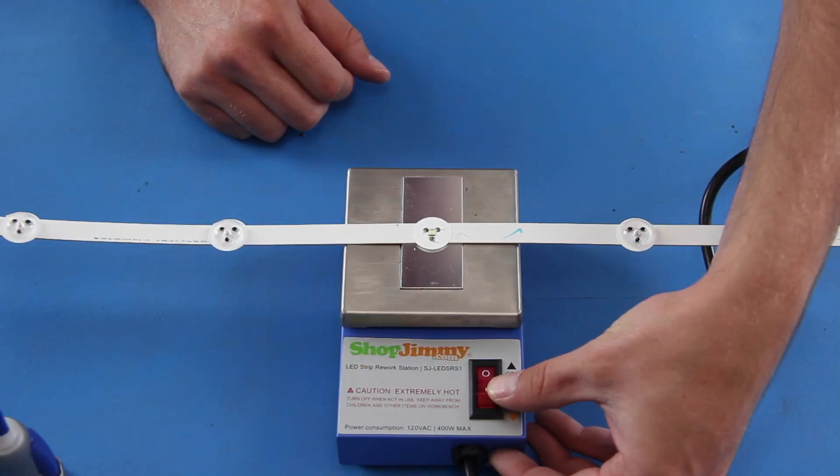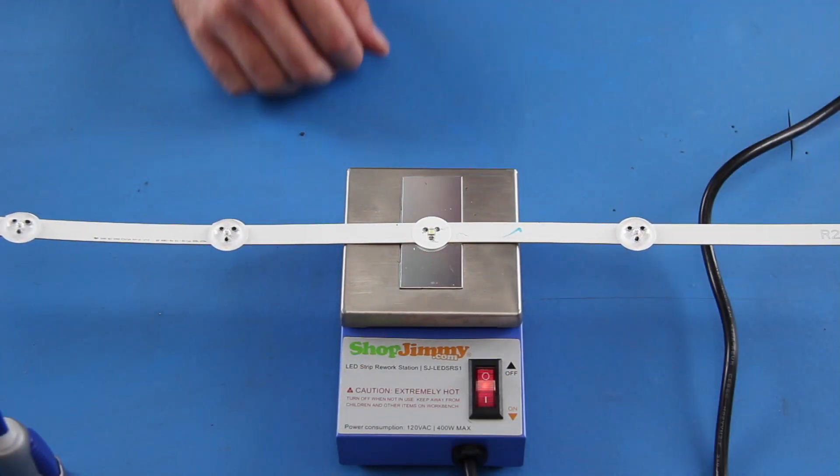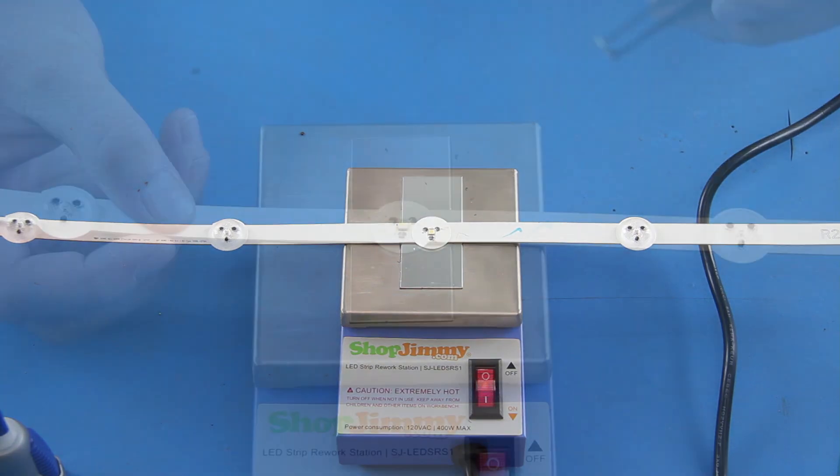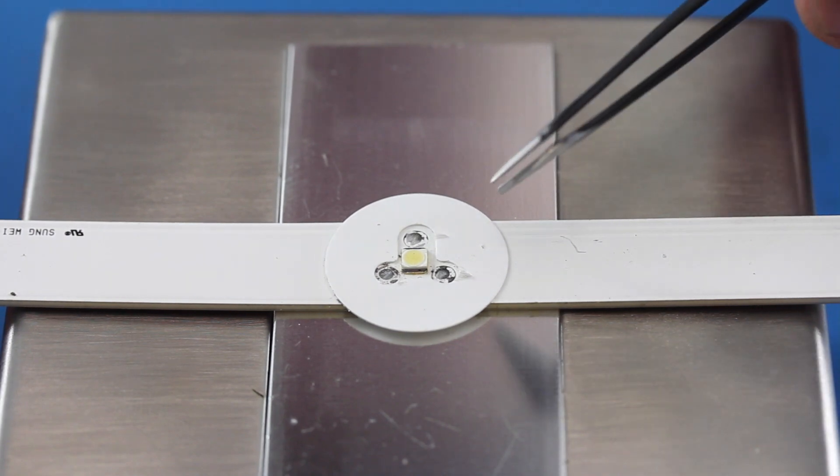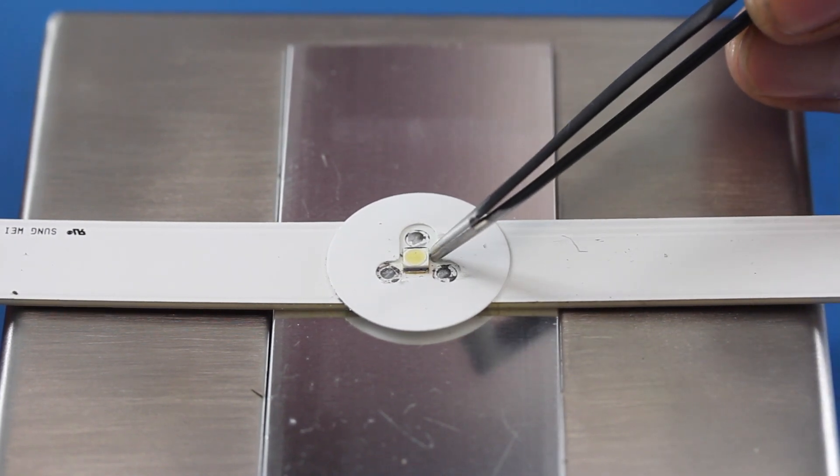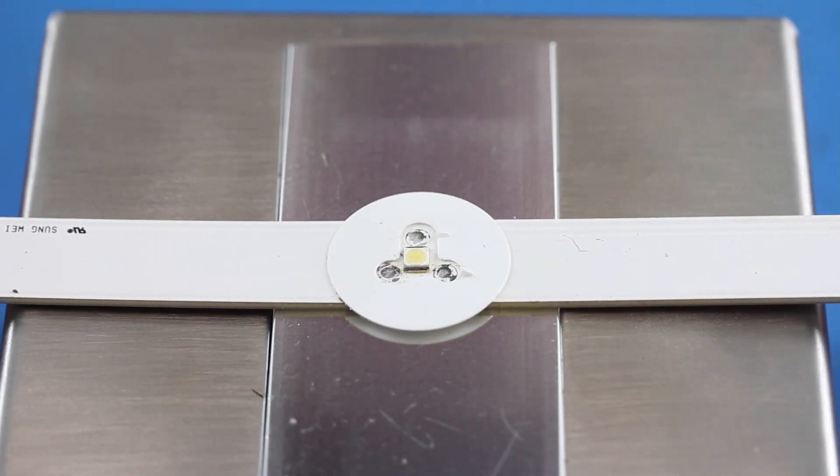Get the LED centered on the rework station and then turn the station on. Use the tweezers to gently push the LED to see if it has warmed up enough to move and be removed. I can also look at the LED and see when the solder around it softens.